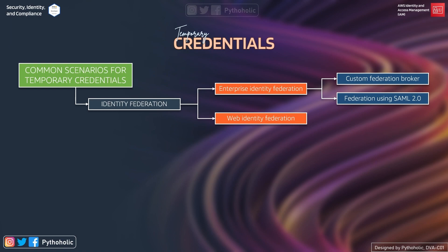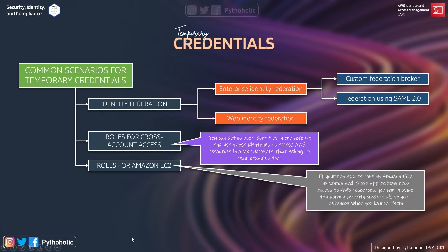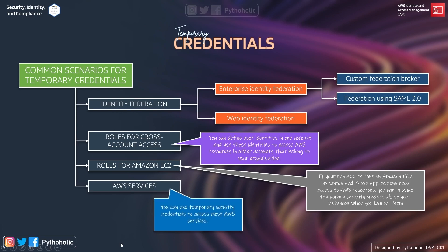Next, roles for cross-account access allow you to define user identities in one account and use those identities to access AWS resources in another account in your organization. Roles for Amazon EC2 help when applications running on EC2 instances need access to AWS resources — you can provide temporary security credentials to those instances when you launch them, using roles. Finally, you can use temporary security credentials to access most AWS services, and a list of services you can create roles for will be provided in the description below.